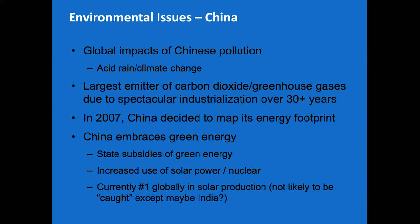As of 2007, China decided to map its energy footprint. They do embrace green energy — there are lots of subsidies for solar and other sources — and they are currently the number one producer of solar capacity. But they still rely quite heavily on fossil fuels: coal and natural gas.